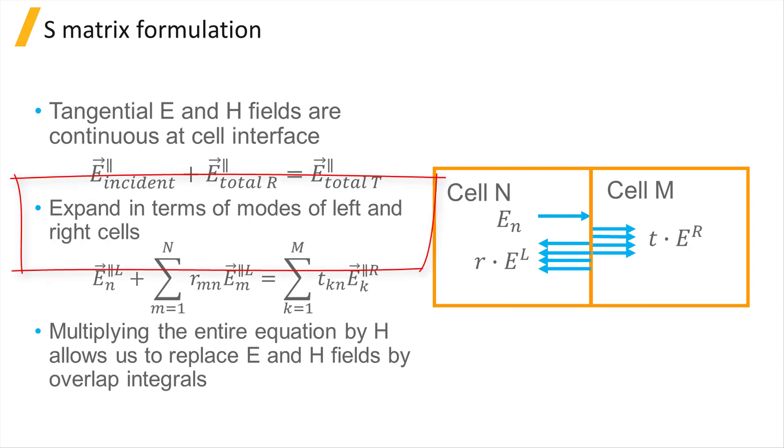By modal expansion, we can expand the transmitted and reflected modes in terms of the set of modes on either side of the interface, where the fields are weighted by the reflection and transmission coefficients. If we multiply both sides of this equation by the H fields, we can replace the E and H fields by overlap integrals.